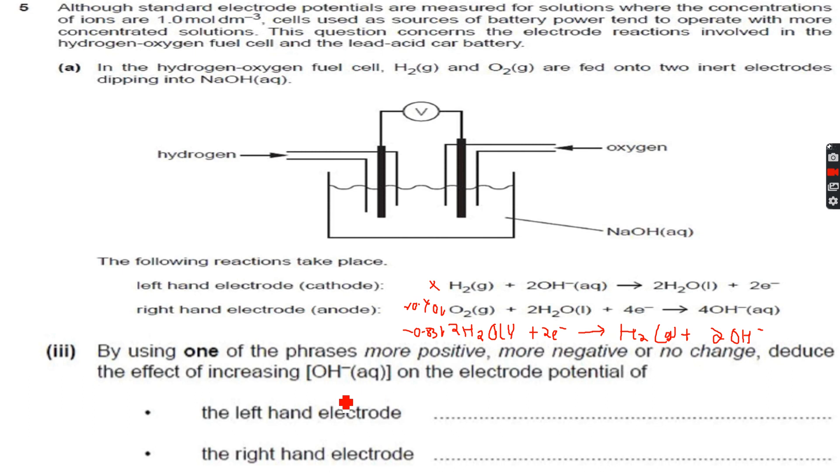Now let's read the question. By using one of the phrases more positive, more negative, or no change, deduce the effect of increasing OH negative aqueous on the electrode potential of the left-hand electrode. The left-hand electrode is the hydrogen electrode which we have written over here. If we increase OH negative, which is this reactant, then the concentration of OH negative is increasing, so the equilibrium will shift to the left to oppose the increase, as I said, Le Chatelier's principle.